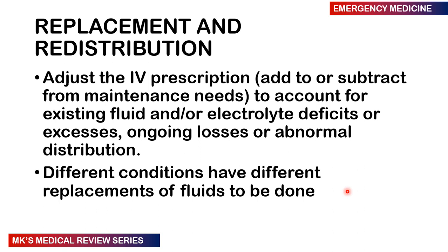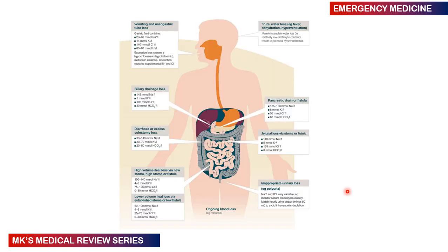For Replacement and Redistribution, adjust the IV prescription by adding or subtracting from maintenance fluid to account for existing fluid losses, electrolyte deficiencies, excess or ongoing losses, or abnormal fluid distribution. Different conditions have different requirements, and a table of ongoing losses — including vomiting, biliary loss, diarrhea, and colostomies — helps quantify the amounts to replace.